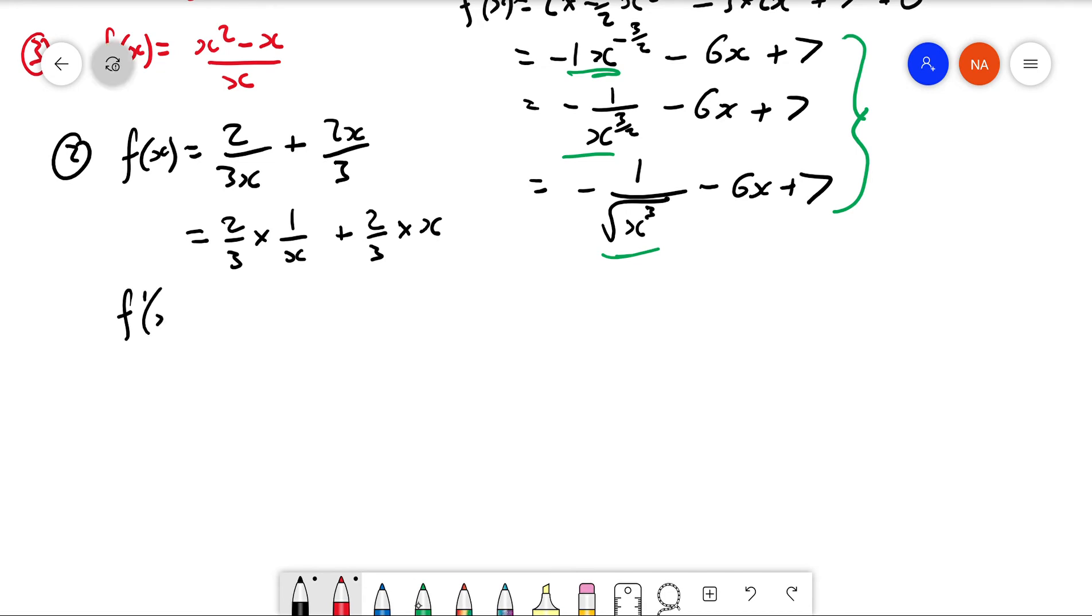And then when you come to differentiate, this is just 2/3 times - oh no, I shouldn't - sorry, I'll have to - okay, I will just have to write it in index notation first before I can differentiate: x to the negative 1 plus 2/3 times x. Now we can find the derivative - just getting a bit ahead of myself.